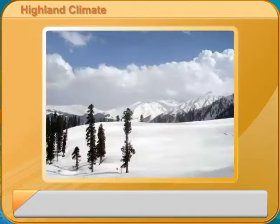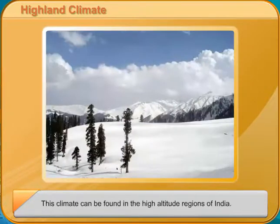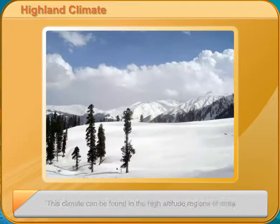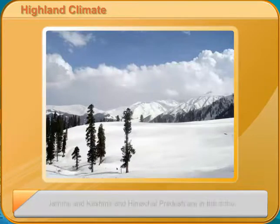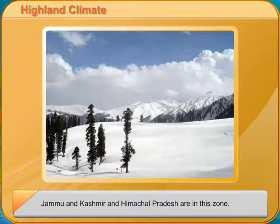Arid, dry climate. This zone has hot summers. During monsoons, this zone receives very little or no rain. The winters are cold. The northwestern states of India — Rajasthan and Gujarat — are a part of this zone.